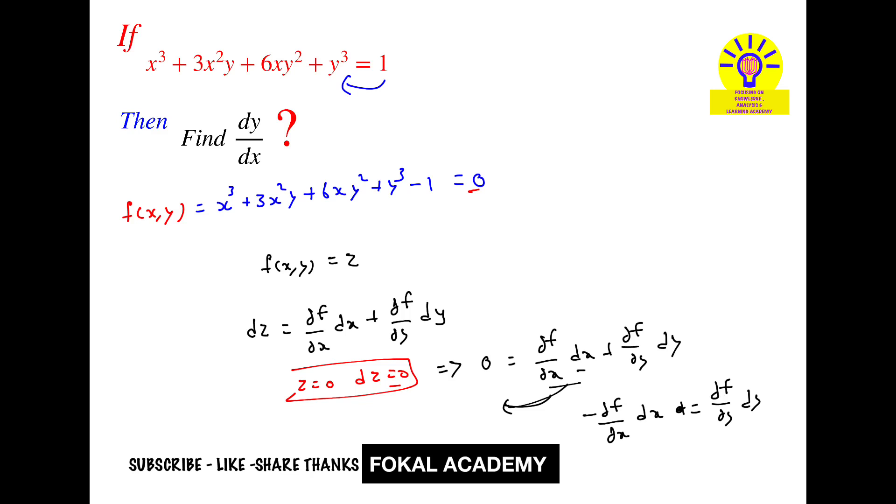Now bring this term to this side and bring this term to this side. Then we get minus ∂f by ∂x upon ∂f by ∂y equal to dy by dx. So if you want dy by dx for the given problem, first find minus ∂f by ∂x and ∂f by ∂y, then substitute the values here to get dy by dx.